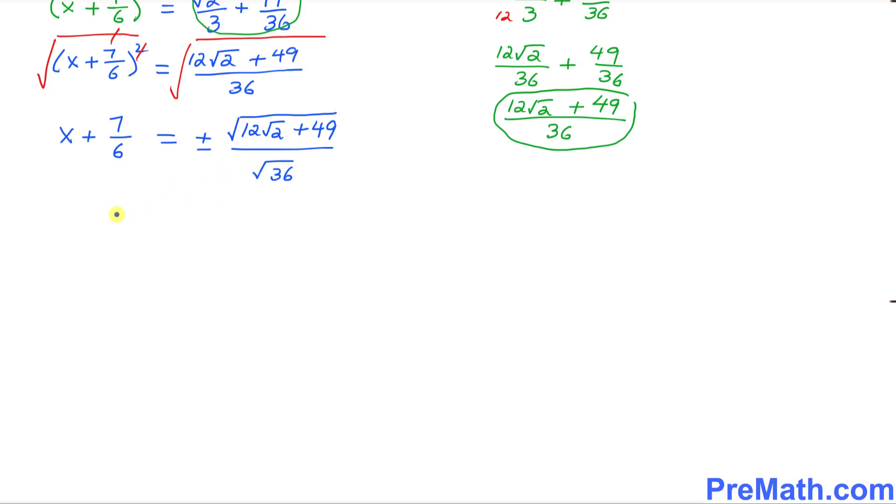So far so good. So the next step is x + 7/6 turns out to be equal to positive or negative. Here you can see I can switch them around. I can write as 49 + 12√2. And at the denominator you can see this √36 is simply 6. So far so good.